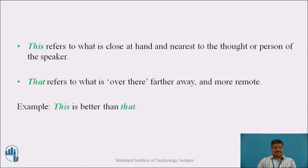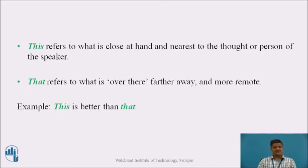'This' refers to what is close at hand and nearest to the thought or person of the speaker. In simple words, 'this' refers to things or persons which are close, and 'that' refers to things or persons which are far away or remote. For example: 'This is better than that.' So 'this' is used for things or persons which are near, and 'that' is for things or persons which are far away. This is one more rule related to 'this' and 'that'.